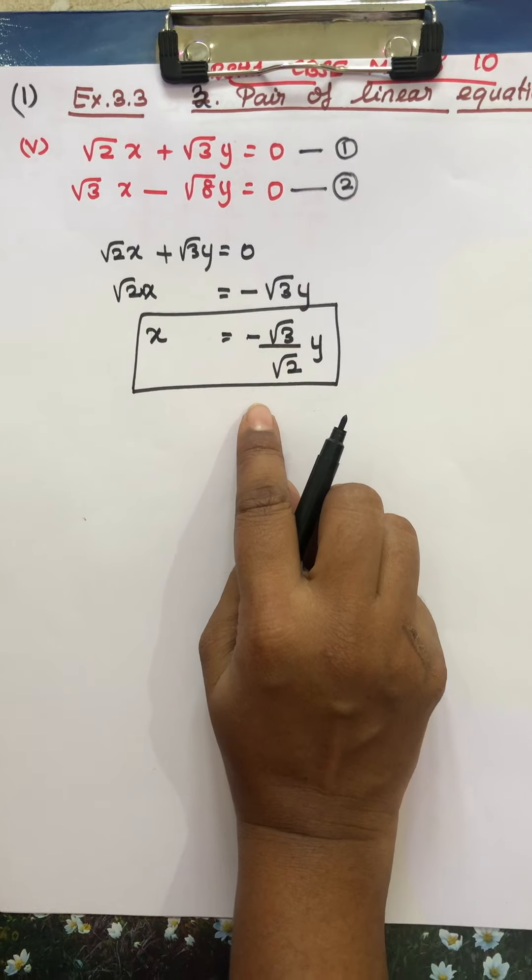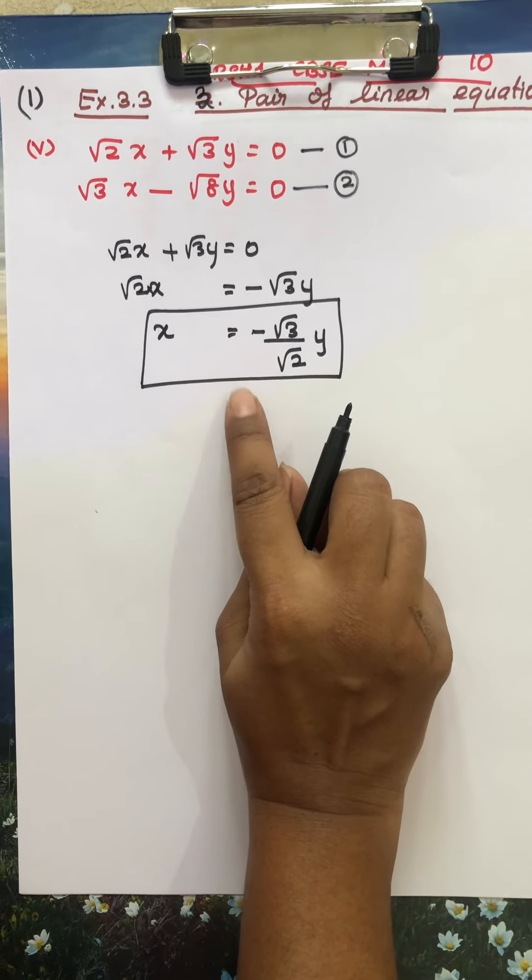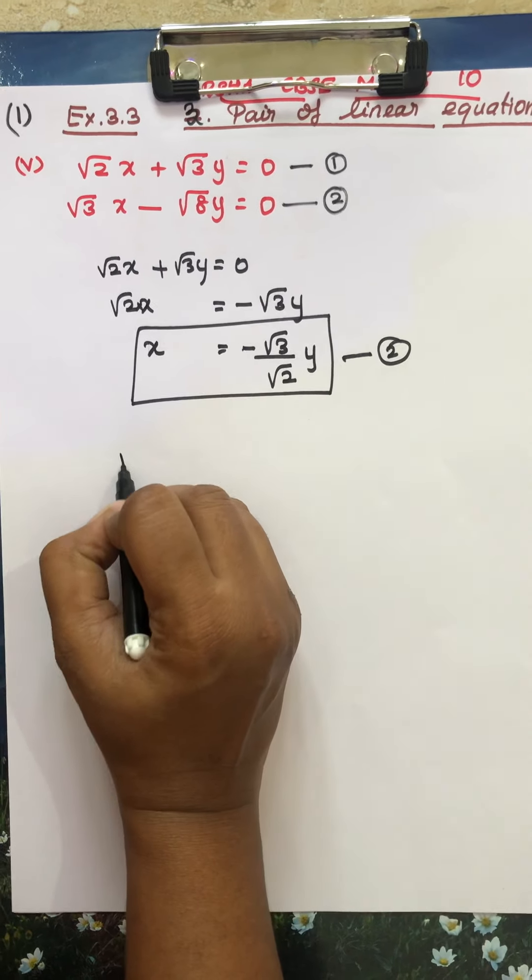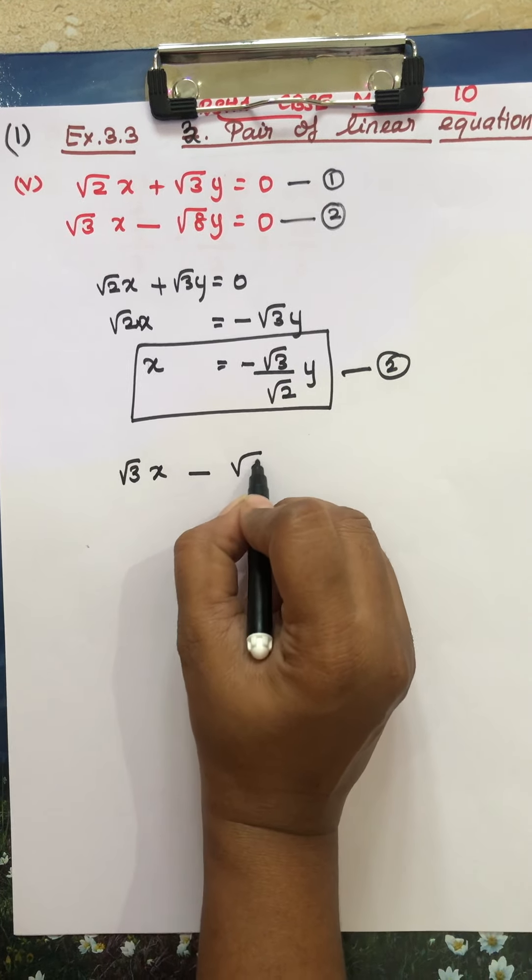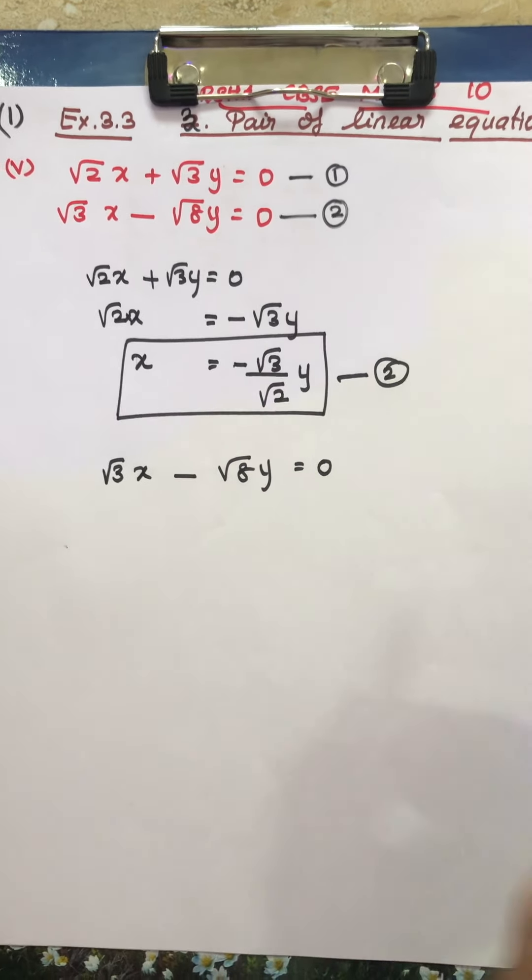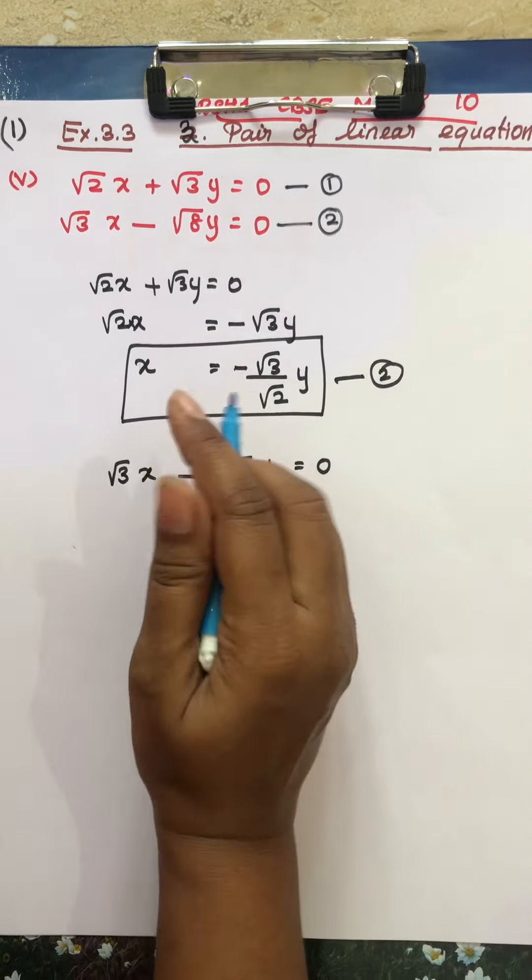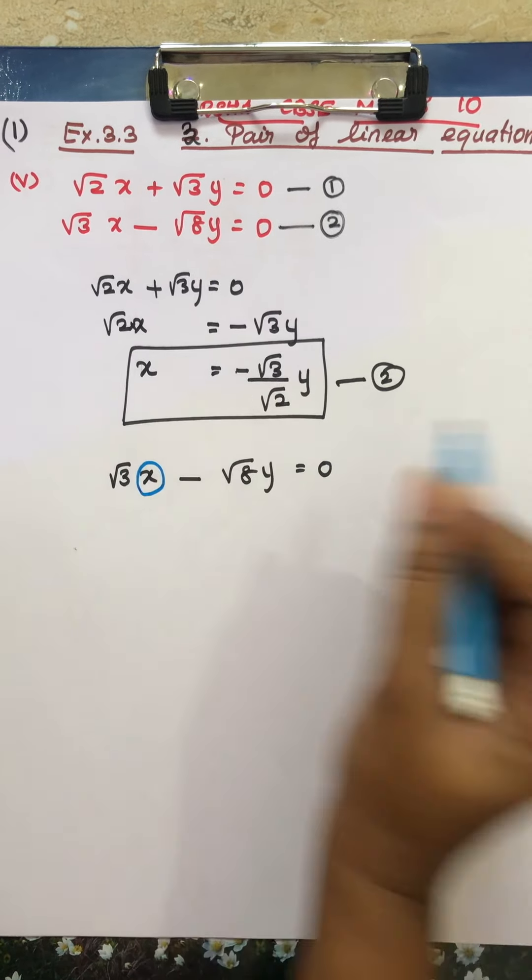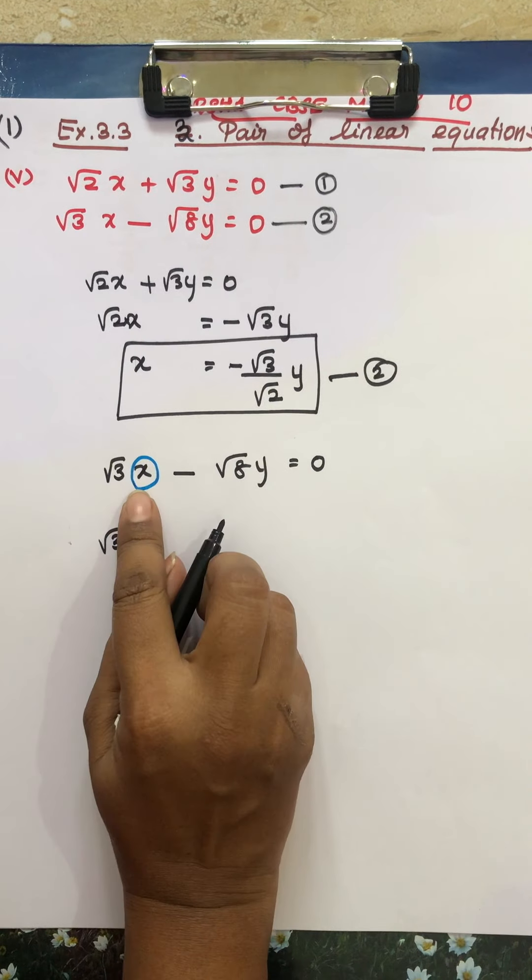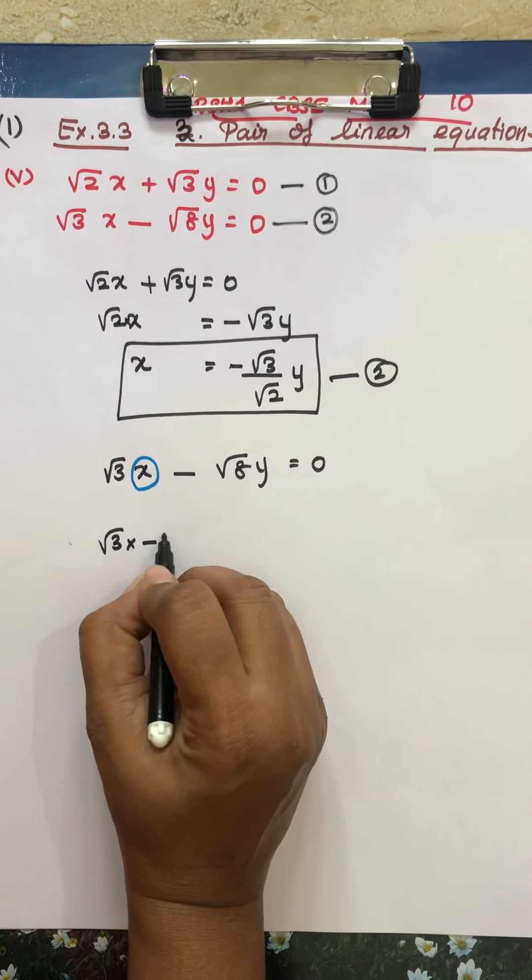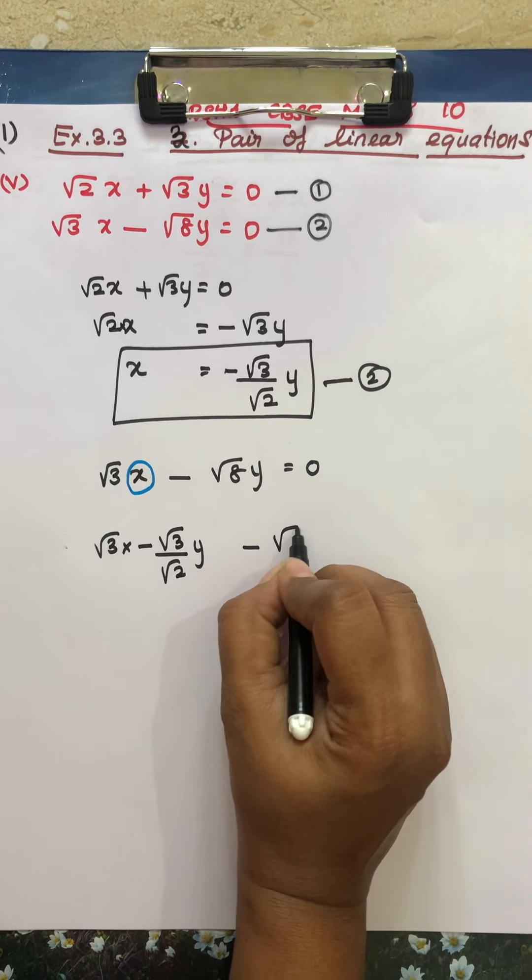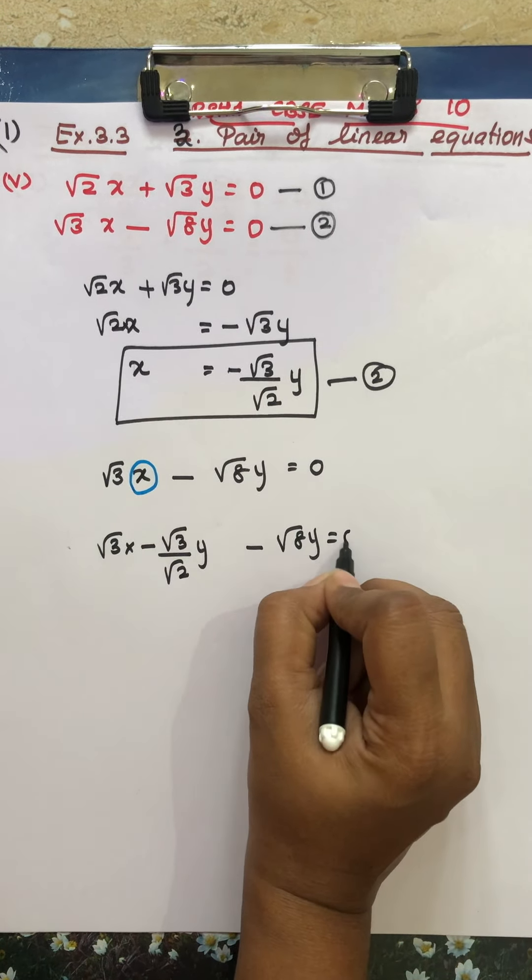Now after this step, we go to write the second equation. Substitute in second equation, root 3x minus root 8y equal to 0.